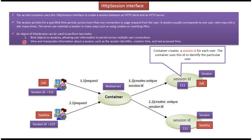An object of HTTP session can be used to perform two tasks. The first is to bind objects to the session — using the session.setAttribute method, we can set an object to the session and use that object in other pages. The second task is to view and manipulate information about a session, such as the session identifier, creation time, and last access time. There are methods available in the HTTP session interface to get all of that information.